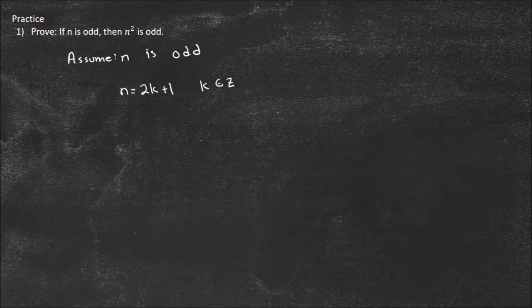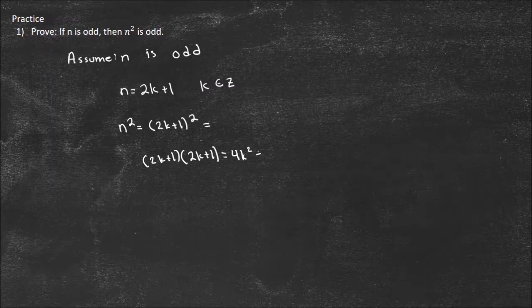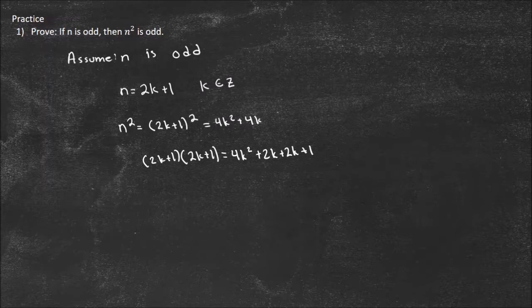All odd numbers have to be written as 2k plus 1 where k is some integer — that's just the definition of an odd number. Now I'm trying to get to n squared, so what if I square the 2k plus 1? So n squared equals (2k+1) squared. You FOIL that out: (2k+1)(2k+1) gives 4k squared plus 2k plus 2k plus 1, which simplifies to 4k squared plus 4k plus 1.